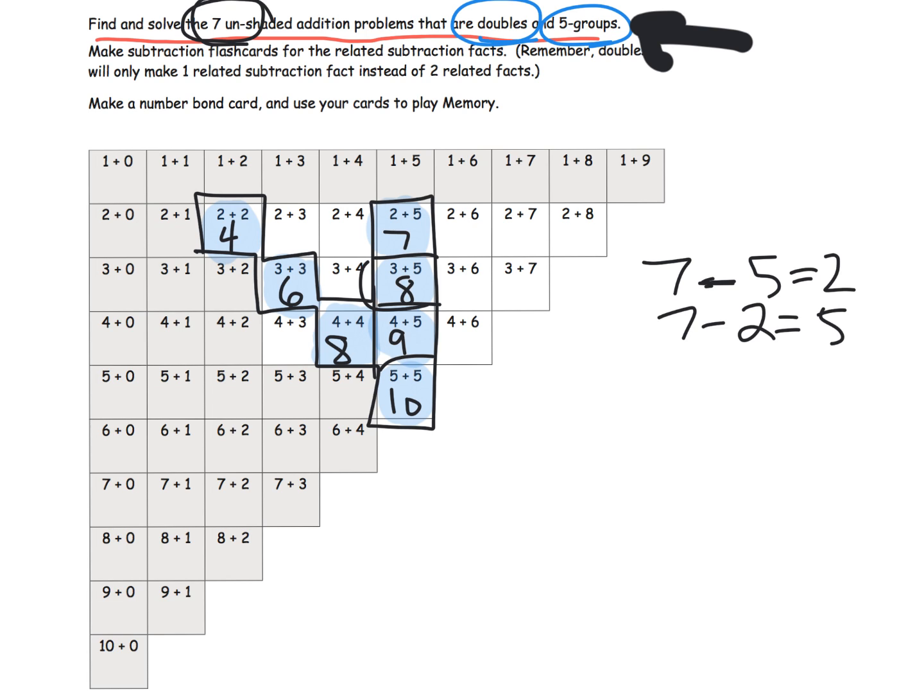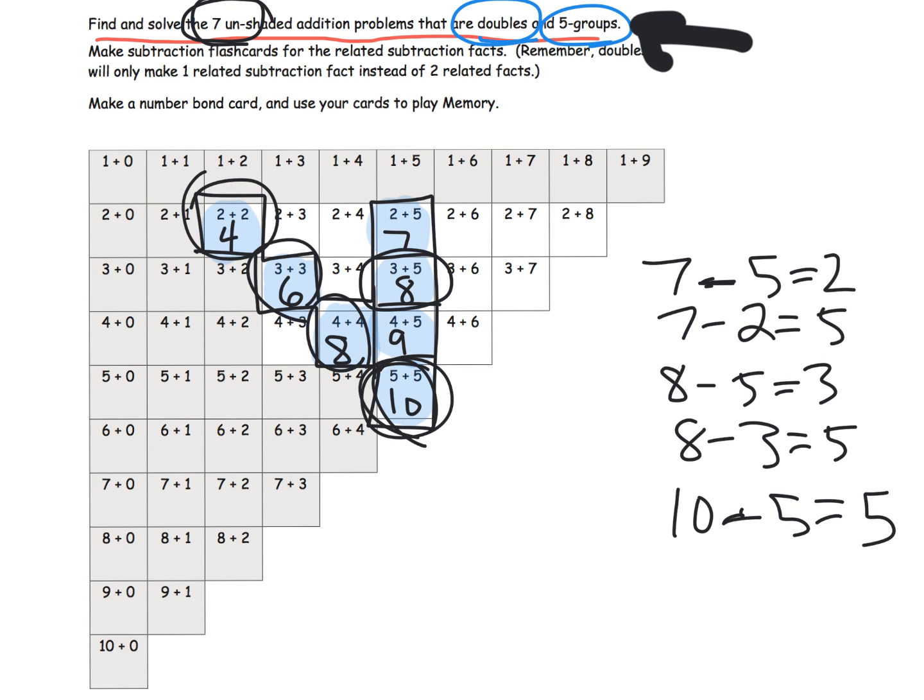If we're going to do 8 right here, it would be 8 minus 5 is 3, 8 minus 3 is 5. Et cetera, et cetera, et cetera. And the idea is don't forget that your doubles are only going to create one subtraction card. For example, 10 right here, 10 minus 5 equals 5. That's the idea of this.